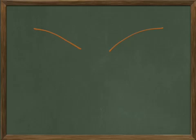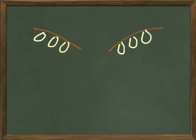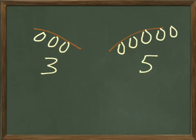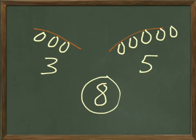Number 4: There are 3 pears on one limb and 5 on another. How many pears on both limbs? So this is a tree limb here and this is a tree limb here. There's 3 pears on one limb and 5 on the other. Between those two limbs, how many pears are there altogether? 3 and 5 are 8.